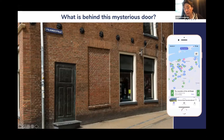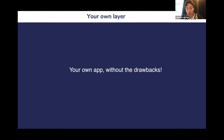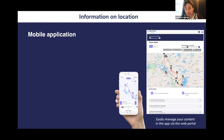On the right side of the screen here, we have a screenshot of the app. We have locations in Groningen that we have put on the map. Space Time is a joint platform of cultural organizations, nature parks, and tourism organizations with which information can be placed on an interactive map. It's kind of having your own app, but having your own app is quite expensive and has a very limited lifespan. The idea of Space Time is it's more than an app — it's more like a platform. It consists of a web page where you can get an account, and as you log on, you manage your own content in the app.